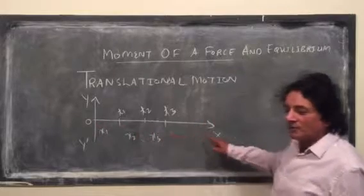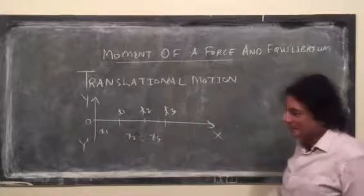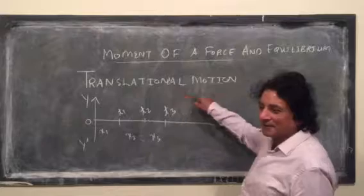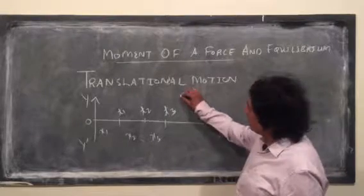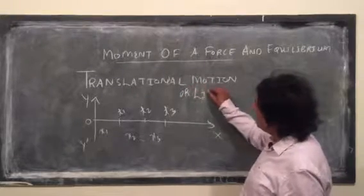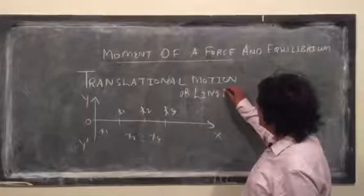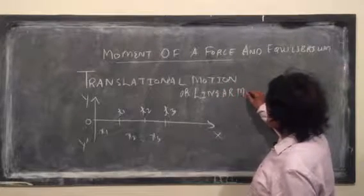But you are moving on x axis only. Such a motion is called translational motion or linear motion. You can also call it rectilinear motion.